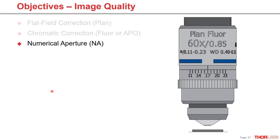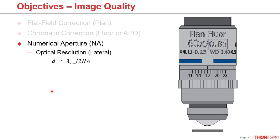Numerical aperture (NA) is an important parameter extensively discussed in our first webinar. NA plays a role in optical resolution — in fluorescence microscopy, lateral resolution is emission wavelength divided by two times the numerical aperture. A higher numerical aperture gives you higher or finer optical resolution. At the end of the day, this optical resolution is a physical limit ruled by the diffraction of light, so it's the emission wavelength that determines the physical limit — you won't be able to get anything smaller than half of that.